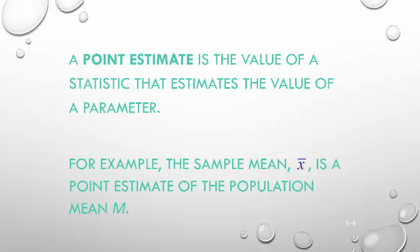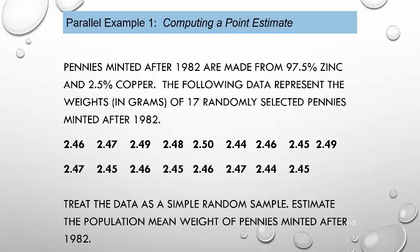For example, the sample mean x-bar is a point estimate for the population mean mu. We use x-bar when we have no idea what the population mean is. Pennies minted after 1982 are made of 97.5% zinc and 2.5% copper. The following data represents the weight in grams of 17 randomly selected pennies minted after 1982. We're going to treat this data as a simple random sample to estimate the population mean weight of pennies minted after 1982.